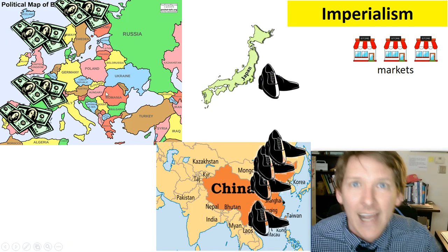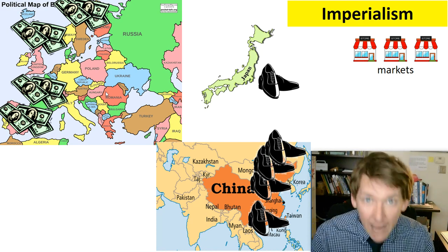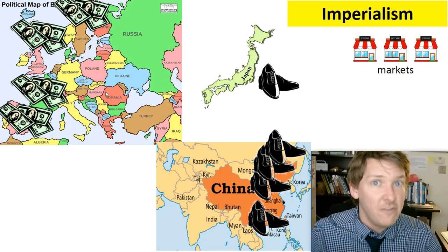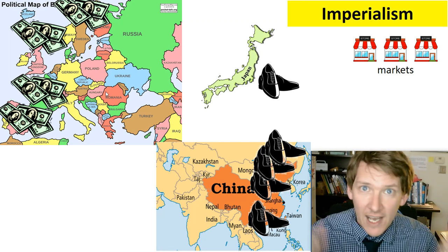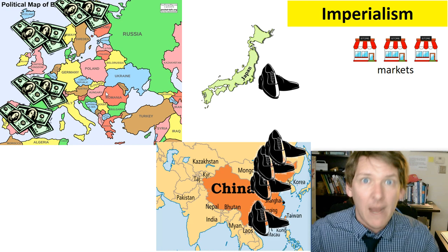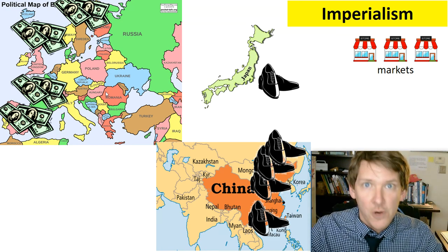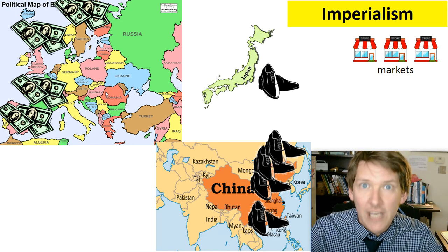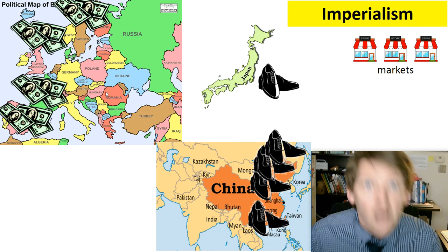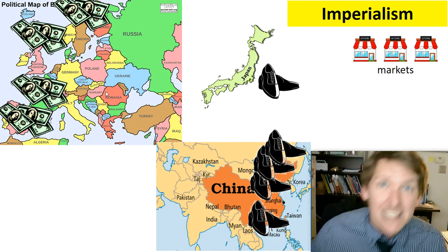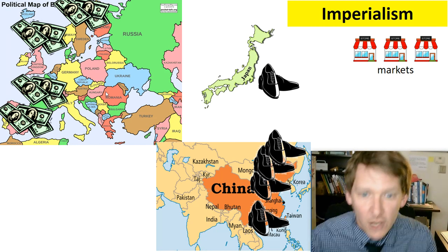Even Japan gets in on the game. Japan was like China back in 1853. Remember, America imperialized Japan — we went in with Commodore Perry with the gunboat saying you're going to open your markets or we're going to kill you. And Japan said, alright, and then decided to do that same thing to China.